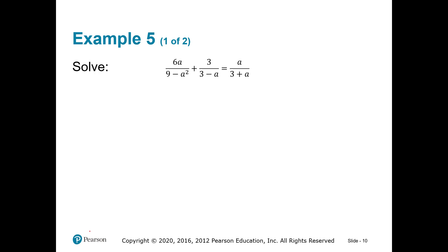Do you notice all three denominators are not in descending order? They all have the number first and the variable second. If they're all in the flipped order, I can leave them this way. The only one I need to factor is this first denominator — and after you do the work, it ends up factored. So our lowest common denominator will be (3 minus a) in parentheses times (3 plus a) in parentheses.